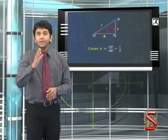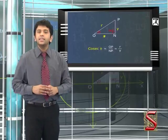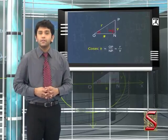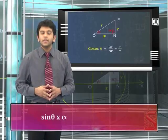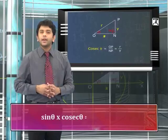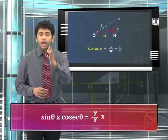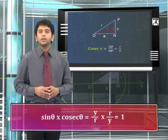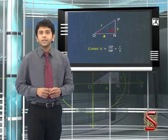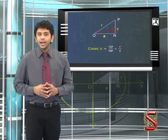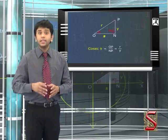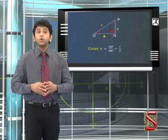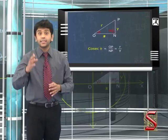In the previous constructions, cosecant theta is the reciprocal of sine theta, since sine theta multiplied by cosecant theta equals Y divided by R multiplied by R divided by Y, which equals 1, and vice versa. Similarly, secant theta and cotangent theta are the reciprocals of cosine theta and tangent theta, respectively.